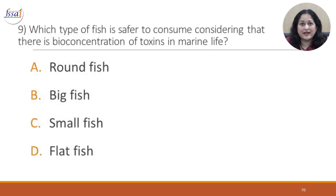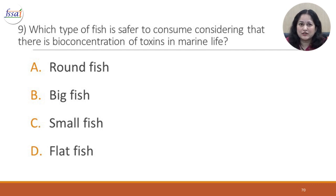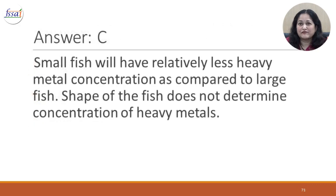Question 9: Which type of fish is safer to consume considering that there is bioconcentration of toxins in marine life? A. Round fish. B. Big fish. C. Small fish. D. Flat fish. The answer is C. Small fish will have relatively less heavy metal concentration as compared to large fish. The shape of the fish does not determine concentration of heavy metals.